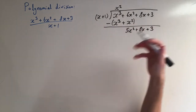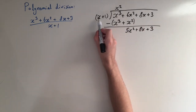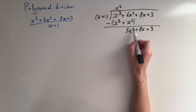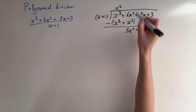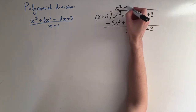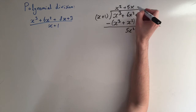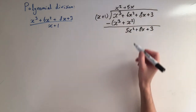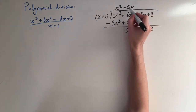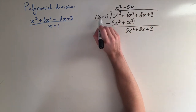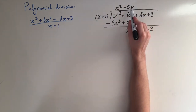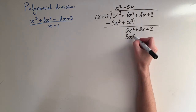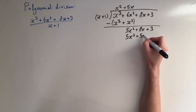Using the same strategy, we look at the leading term x again and divide 5x squared by x, which gives us 5x. That's the second term in our answer. As before, we multiply this back by what we're dividing by: 5x times x plus 1 gives us 5x squared plus 5x.